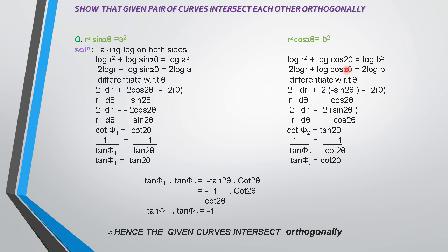the differentiation of log cos2θ, which is (1/cos2θ) times (−sin2θ) times 2. This gives 2·(1/r)·(dr/dθ) = 2sin2θ / cos2θ. We know that (1/r)·(dr/dθ) = cot ψ, so we take this as cot ψ₂ = sin2θ / cos2θ.